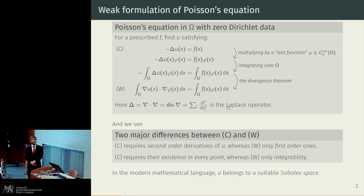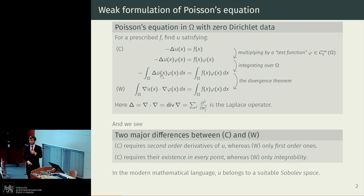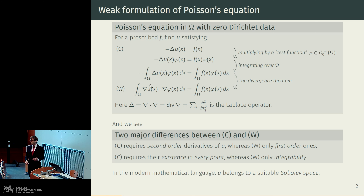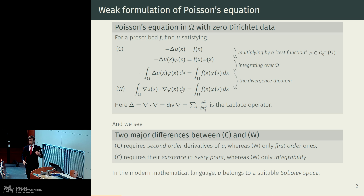By comparing this classical and weak formulation, we immediately see two major differences. Whereas the classical formulation requires derivatives of second order that need to exist in every single point of our underlying domain omega, the weak formulation, on the other hand, requires only existence of first-order derivatives, and they don't need to exist in every single point but only in a weaker sense which makes this integral meaningful. There are, loosely speaking, far more functions that you can integrate than you can differentiate, which gives us much more tools to prove existence of such weak solutions.